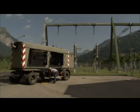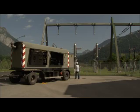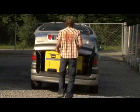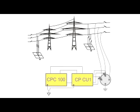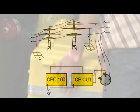Until now, measurements to verify these calculations have rarely been performed due to the excessive effort involved. CPCU1 and CPC100 make these measurements both simple and fast. The line is grounded at the far end. The CPC is connected via the CPCU1 to the overhead line to inject the current. The voltage is measured and impedance and residual compensation factor are automatically calculated.